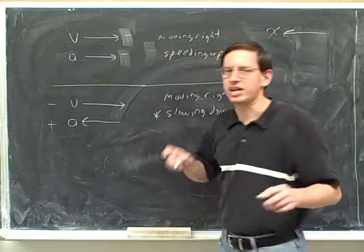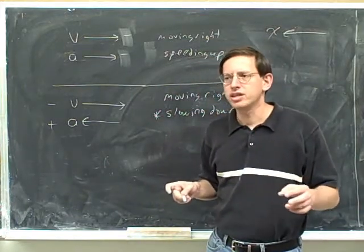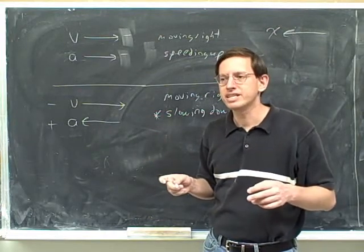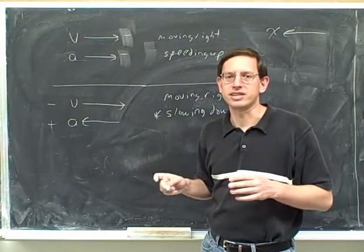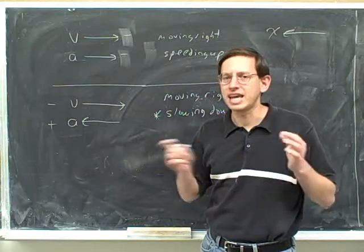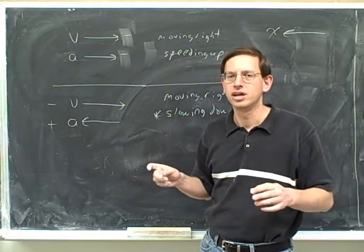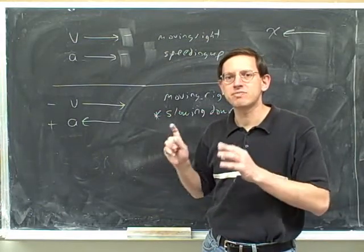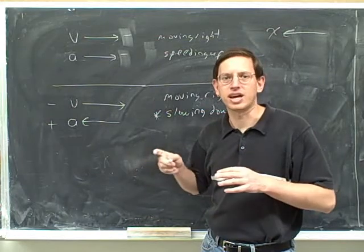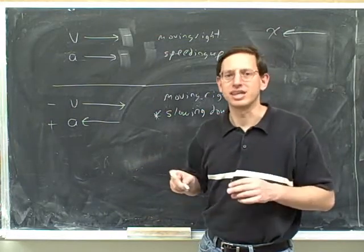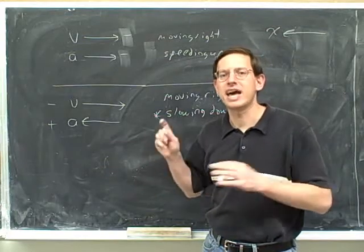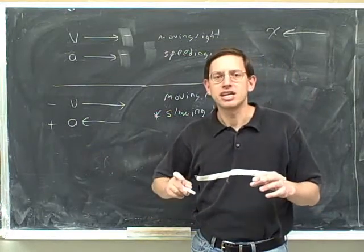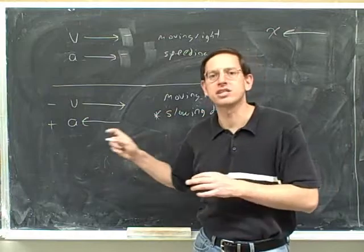It's hard to interpret the acceleration unless you compare it to the velocity. If the acceleration is parallel to the velocity, you're speeding up; if it's anti-parallel, you're slowing down. Using signs: if the acceleration has the same sign as the velocity, you're speeding up. If the acceleration has the opposite sign to the velocity, you're slowing down. What matters is the acceleration's sign compared to the velocity's sign.